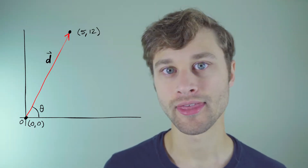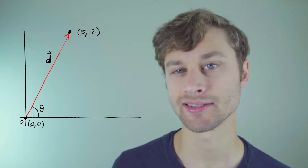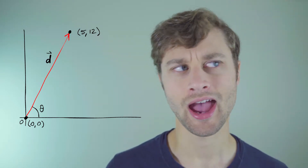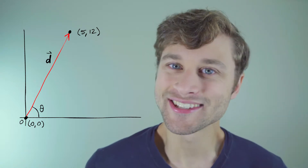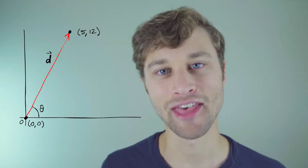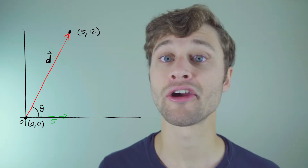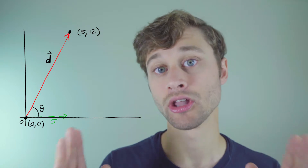So back to our example with the displacement vector d. We need to measure the angle that vector makes with the positive x-axis, because that's what we're going to use as our reference axis. How are we going to find that angle? Well, trigonometry, of course! It's not actually all that bad. The first thing I'm going to do is draw another vector that's parallel to the x-axis and is 5 units long.